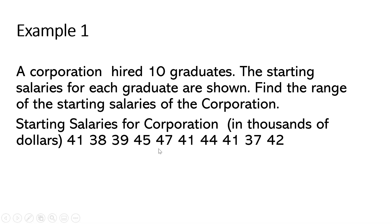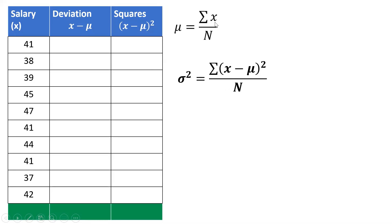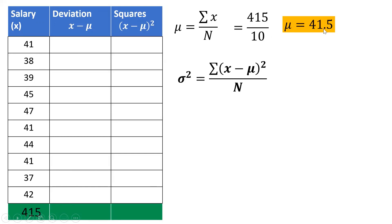Now let us find the variance and the standard deviation of sample number one. A corporation hired 10 graduates; the starting salaries for each graduate are shown in thousands of dollars. The population here is 10. The first column is the salary, that is our X. The formula of variance for the population requires the mean. The mean equals the summation of X over the total number of population. Adding the salaries, the total is 415. So 415 divided by 10 — the population mean is equal to 41.5.